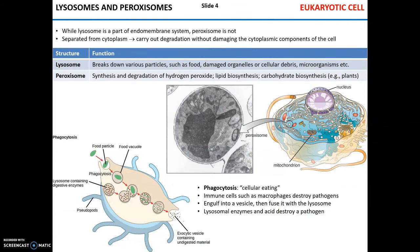The last part of the endomembrane system is the lysosome. Lysosomes break down food, damaged organelles, and various cellular debris — basically the sanitation crew of the cell. The peroxisome is not part of the endomembrane system; its function is the control of hydrogen peroxide levels in the cell, and it also participates in biosynthesis of lipids and carbohydrates.